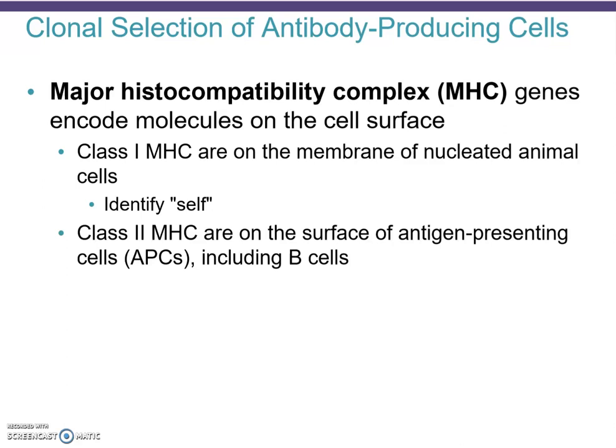It's basically taking a generic key and cutting it specifically to fit a lock. The way the immune system does it is using the major histocompatibility complex, the MHC genes, to differentiate between self and foreign and then make a specific target against the foreign particle. Class 1 MHC molecules are in the membrane of nucleated animal cells for self-identification purposes, and Class 2 MHCs are on the surface of antigen-presenting cells, or APCs, including B cells.